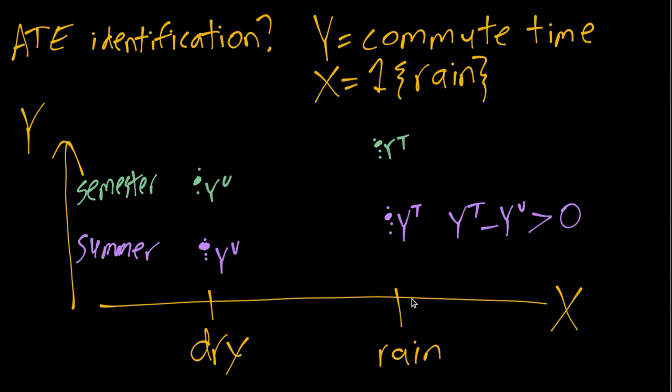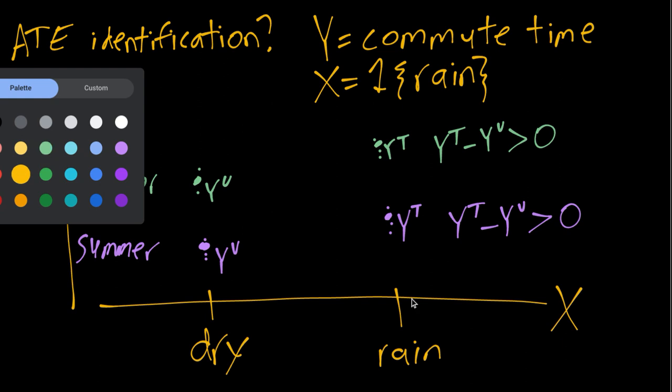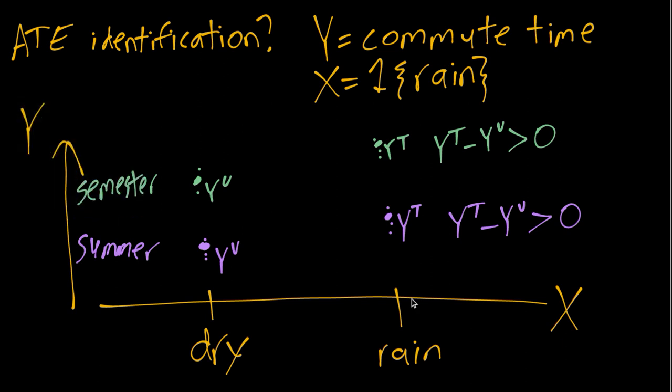So again we can see the true causal effect of rain on commute time. The treated potential outcome minus untreated potential outcome is positive. So rain makes commutes longer. We'll also notice that because of this extra student traffic, both the untreated potential outcome and the treated potential outcome are higher during the semester than during the summer.